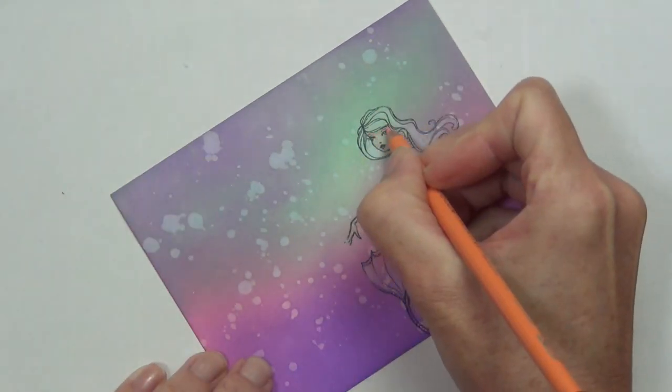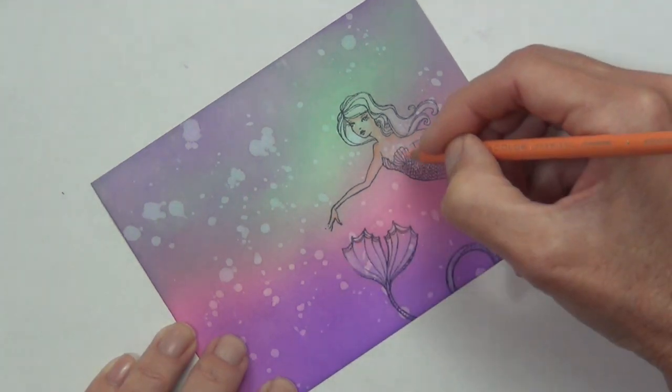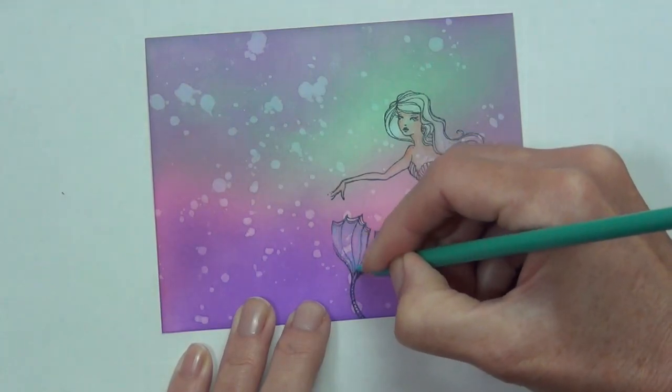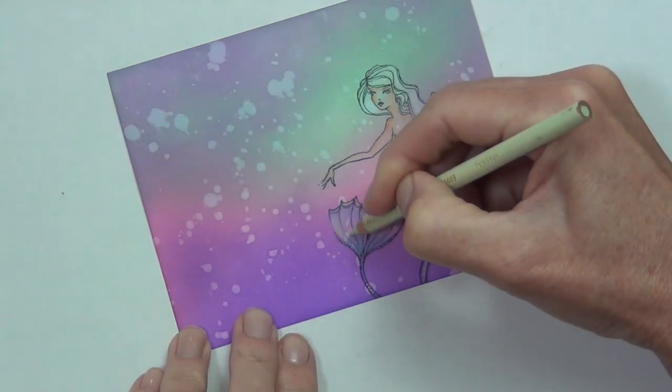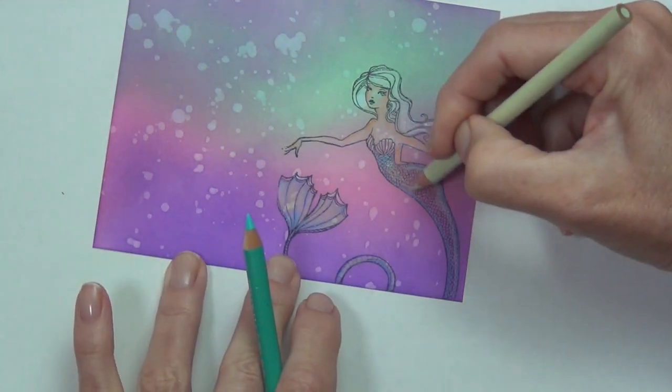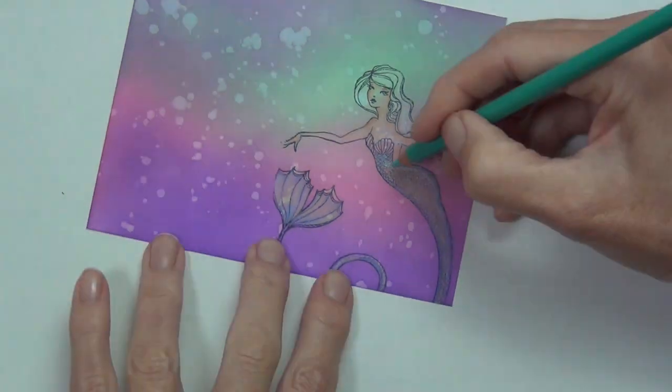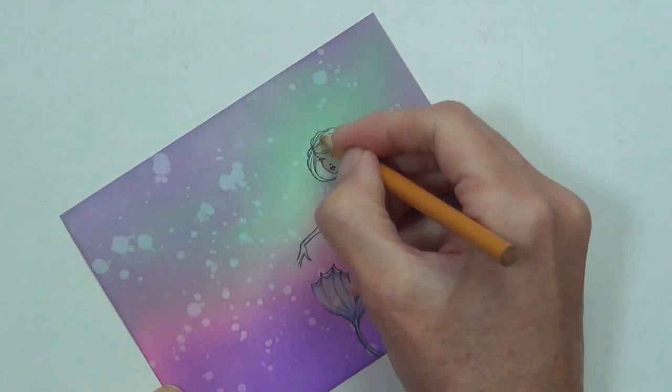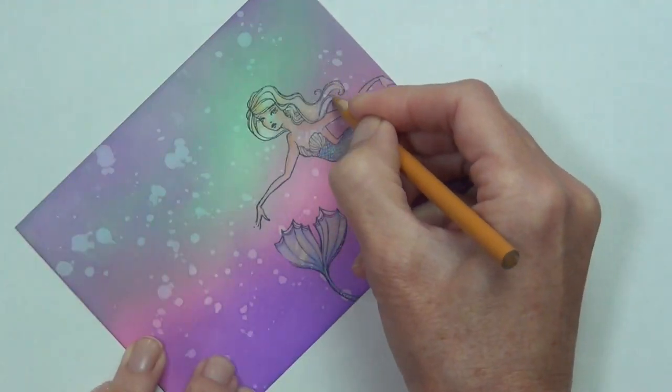I did start by laying down a bit of a base color of white pencil—these are my Prismacolor pencils—and that just allows the color that I'm adding on top to be more true. You don't have to do this. I think it helps to add a bit of a highlight to the image and I'm really happy with how this image colored up on this background design.